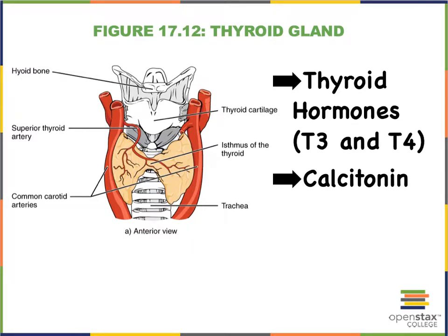We can't forget that our thyroid gland does not just produce thyroid hormones, but it also produces calcitonin, which you already studied in Anatomy & Physiology 1.